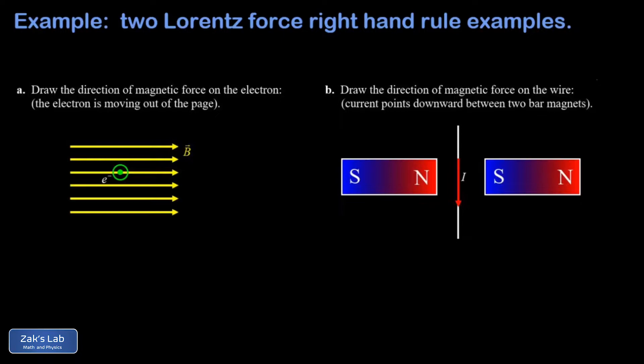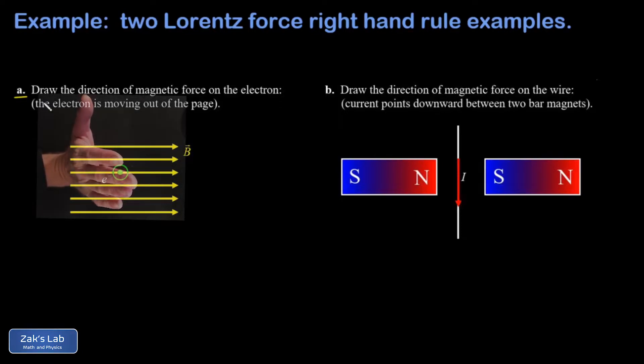Then you have to reverse that answer if the charge is negative. And negative charge is exactly what we see in the first part. I have an electron, so that's negative, and it's coming out of the page at us. So I put my fingers in the direction of the electron velocity.